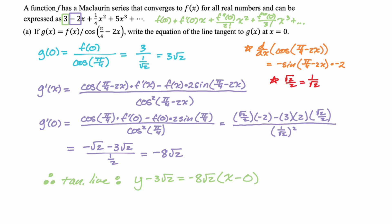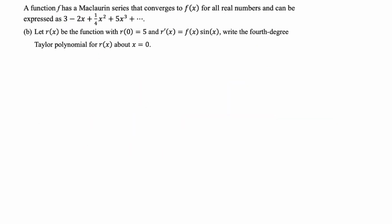These problems increase in difficulty as we go. Let r(x) be the function with r(0) = 5 and r' = f times sine of x. We want the 4th degree Taylor polynomial for r(x) about 0 — that's the Maclaurin polynomial. Since we want a 4th degree polynomial for r, we need to integrate a 3rd degree, so we need the 3rd degree polynomial for f(x) times sine(x), which we get by multiplying the two series together.